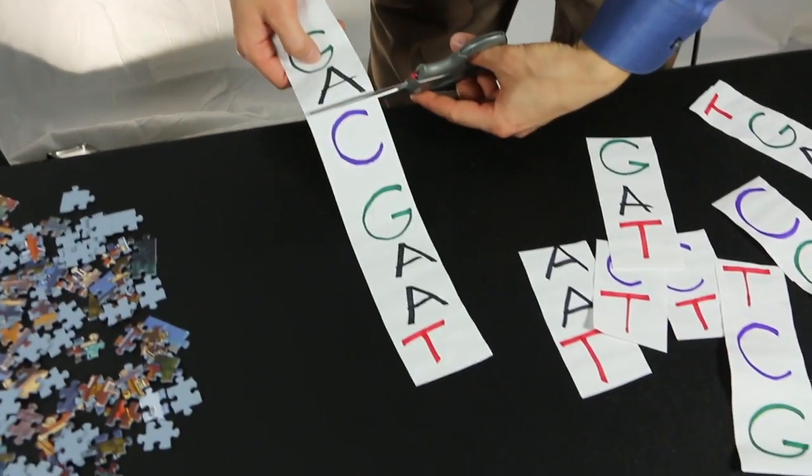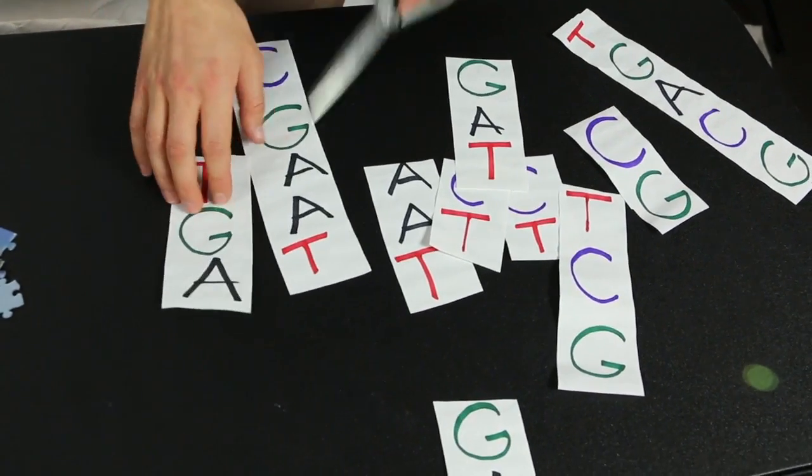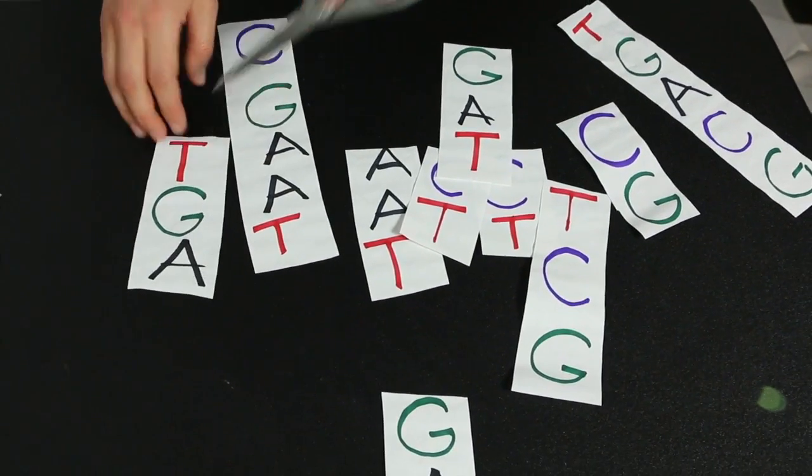This is the problem that faces biologists when they sequence or read the human genome. The machines that sequence the human genome cut the genome into millions and millions of pieces. This makes it easier to read the nucleic acids that make up our genome.